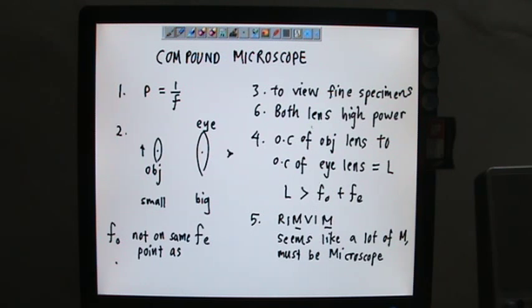We can do some examples. When we say that they are not on the same line, it's probably something like this: Fo is here and then Fe is here, but the optical center is from here to here.